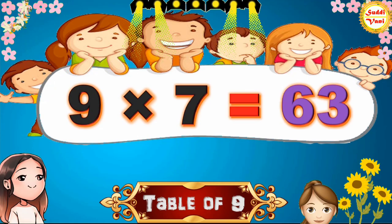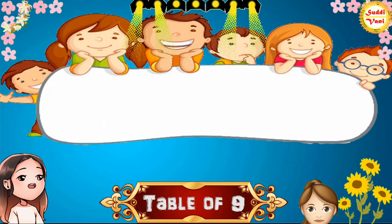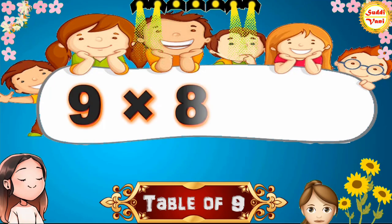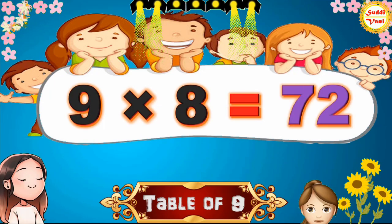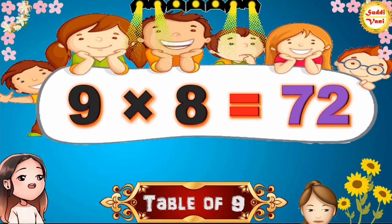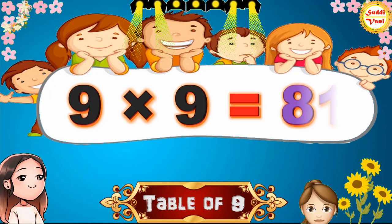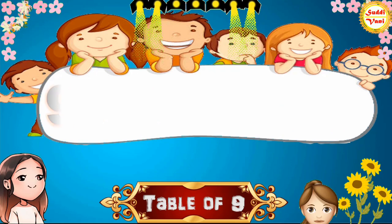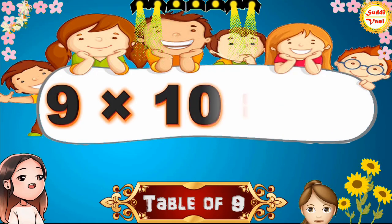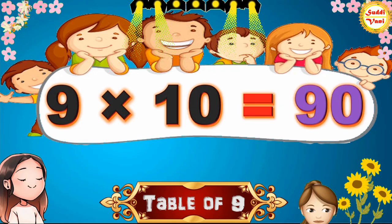9 × 7 = 63, 9 × 8 = 72, 9 × 9 = 81, 9 × 10 = 90.